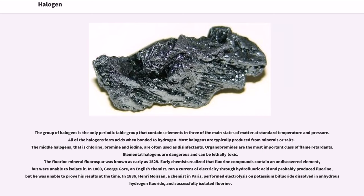Most halogens are typically produced from minerals or salts. The middle halogens — chlorine, bromine, and iodine — are often used as disinfectants. Organobromides are the most important class of flame retardants. Elemental halogens are dangerous and can be lethally toxic.